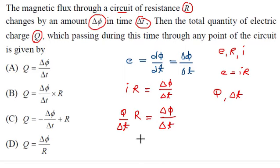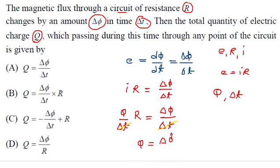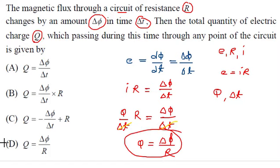Here dt cancels on both sides, and rearranging gives Q = dφ/R. This is the required equation, so option D is the correct one.